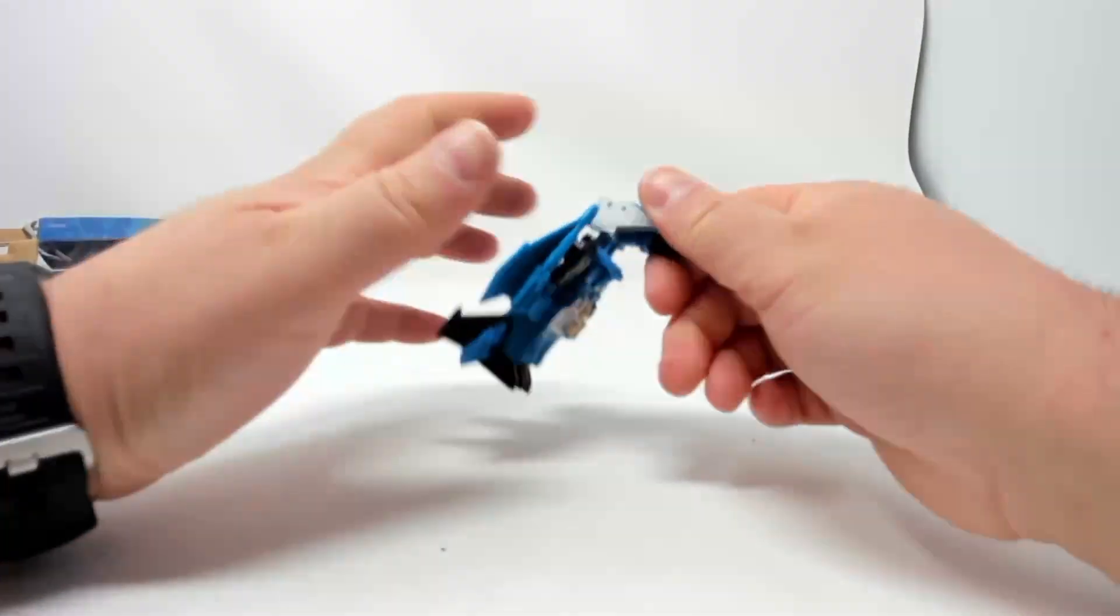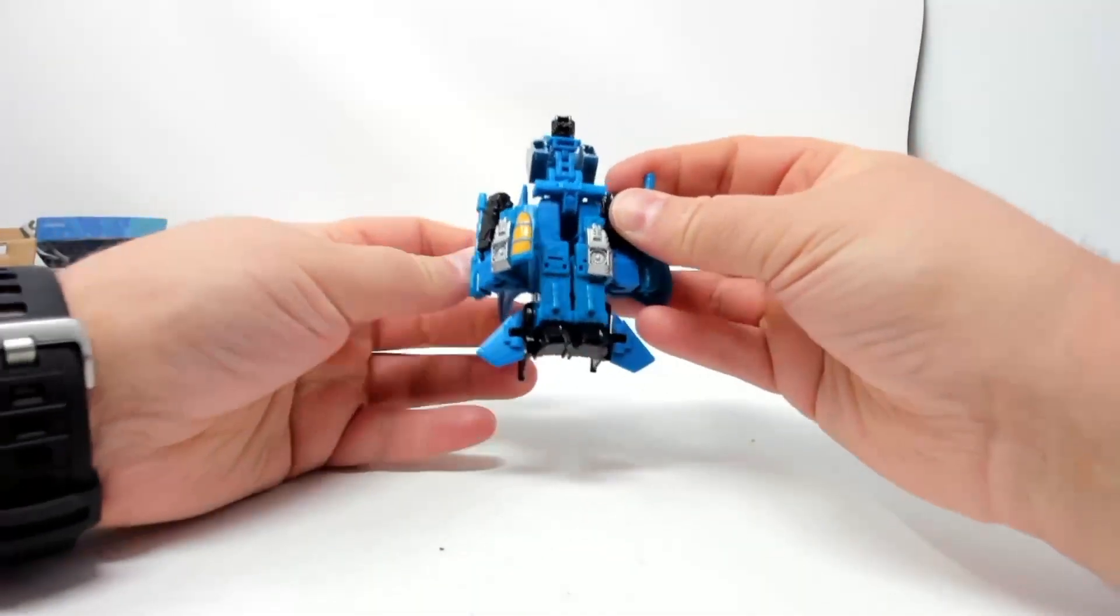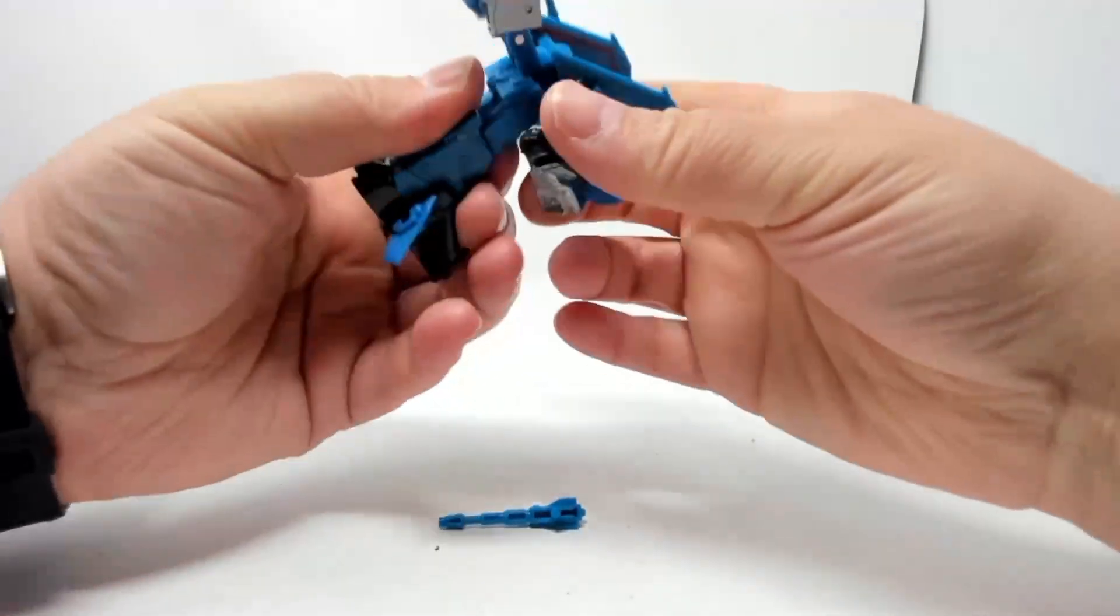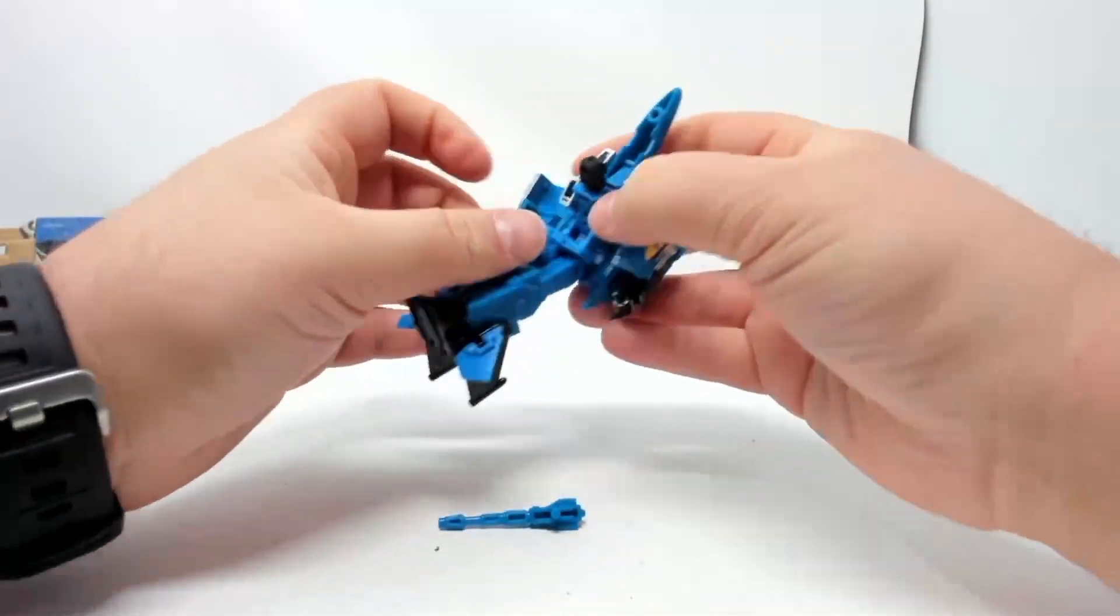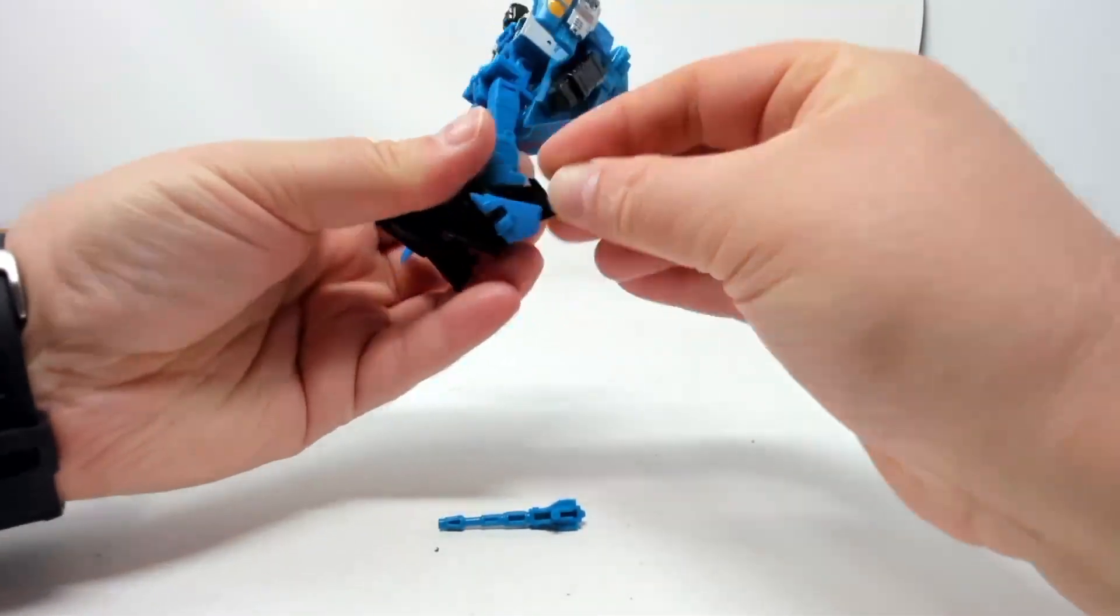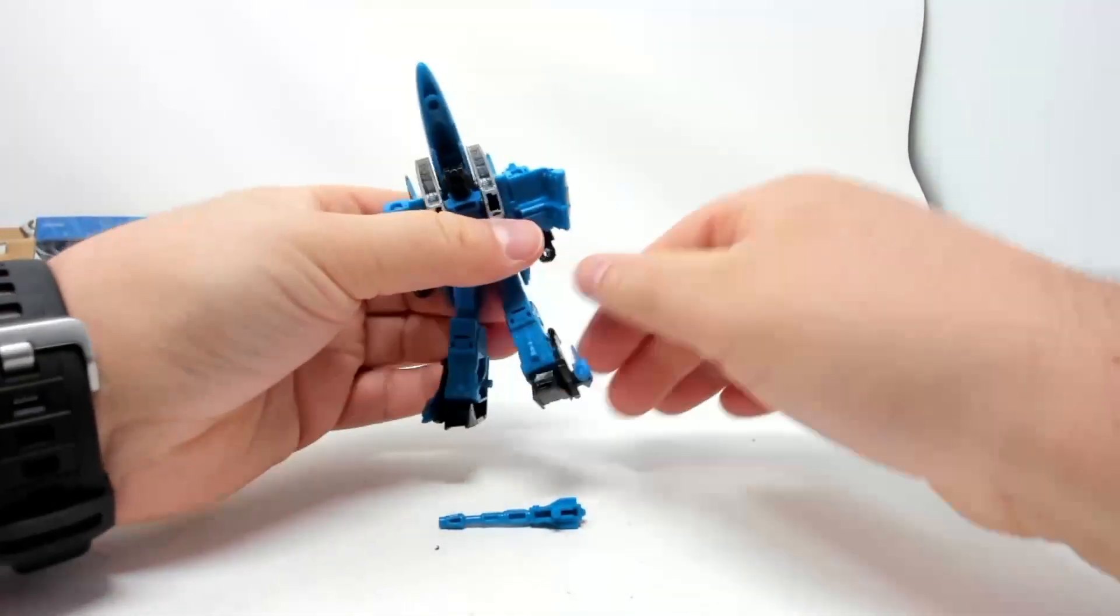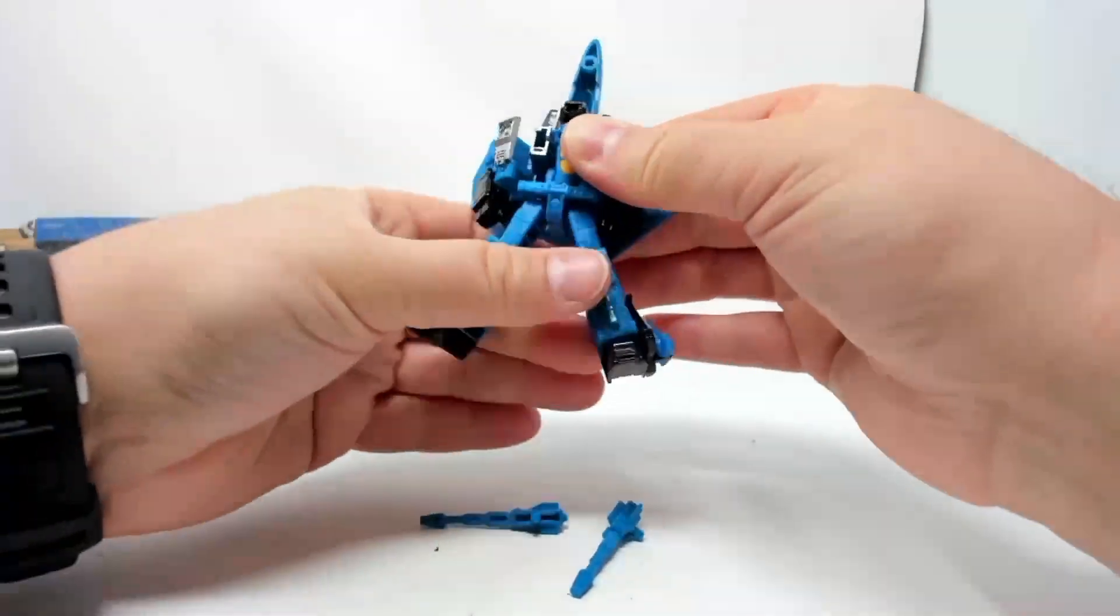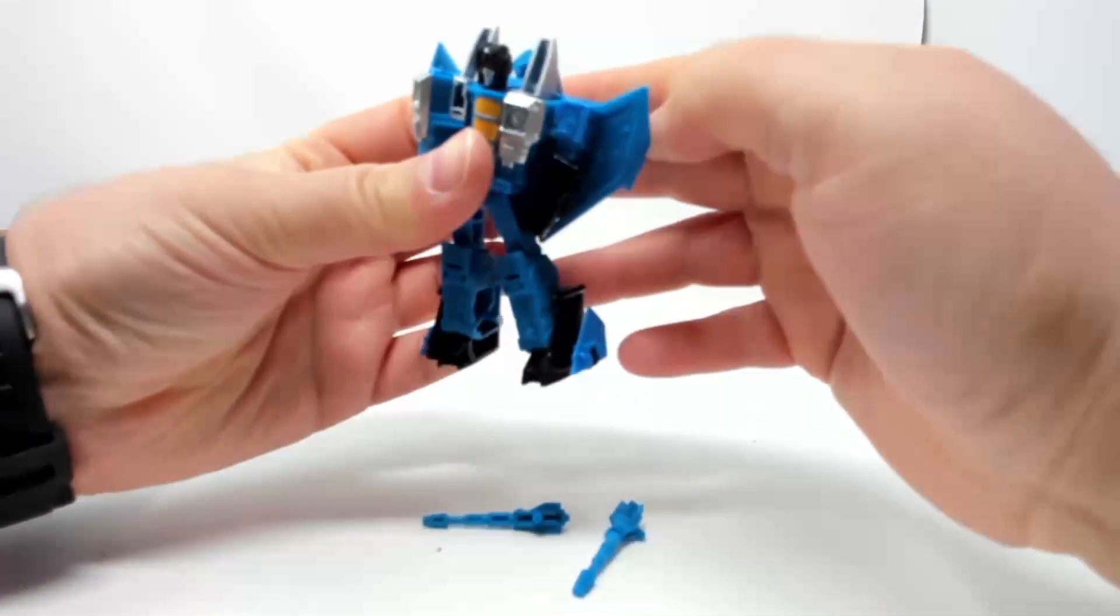All these core class figures, most of them anyway except for the dinobots, have very good articulation. And they're all fun to transform, even the dinobots. Yeah, I can never transform it with that staying on. Let me just rotate its head around, fold that back.